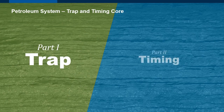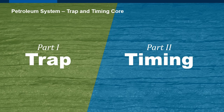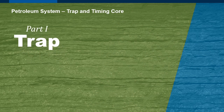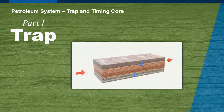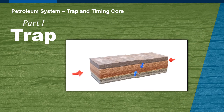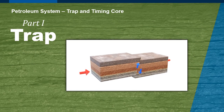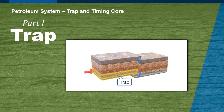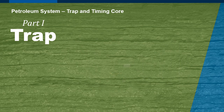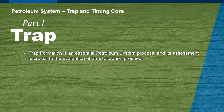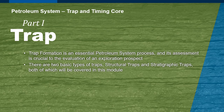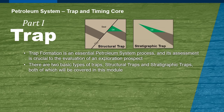This module is presented in two parts, each of which introduces an essential part of the petroleum system. In the first part of the module you will learn about the formation of a trap, which is a configuration of rocks suitable for containing hydrocarbons and sealed by a relatively impermeable formation that will effectively contain a hydrocarbon accumulation. There are two basic types of traps: structural traps and stratigraphic traps, both of which will be covered in this module.